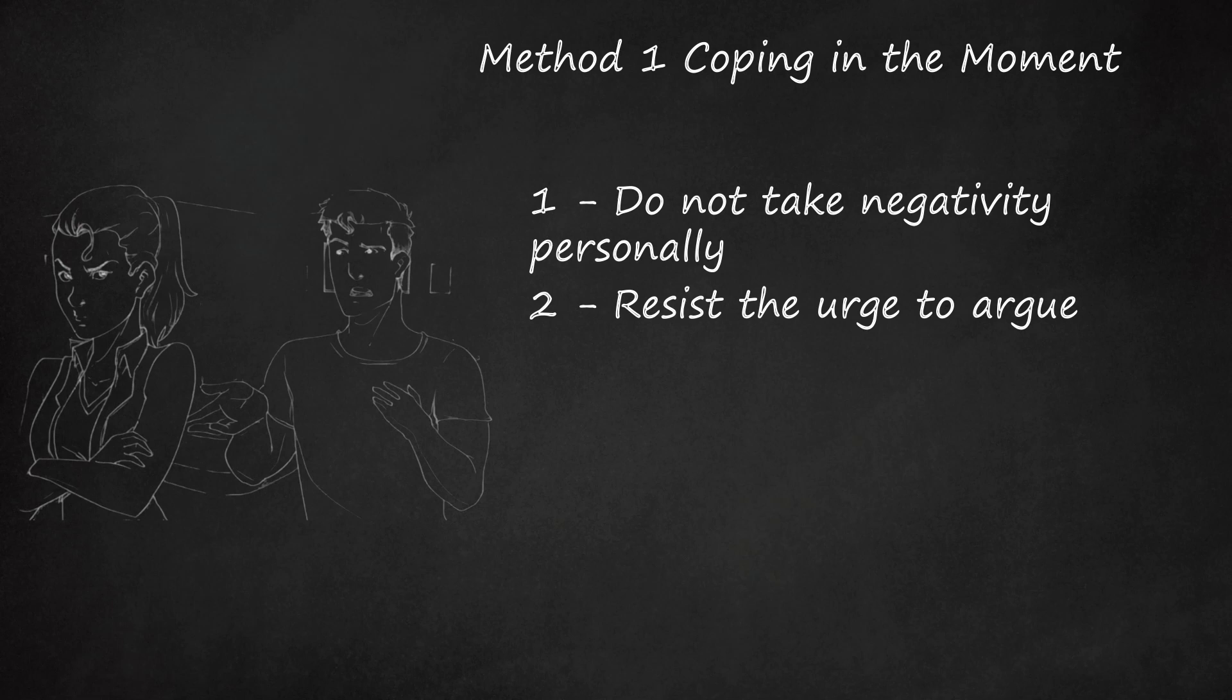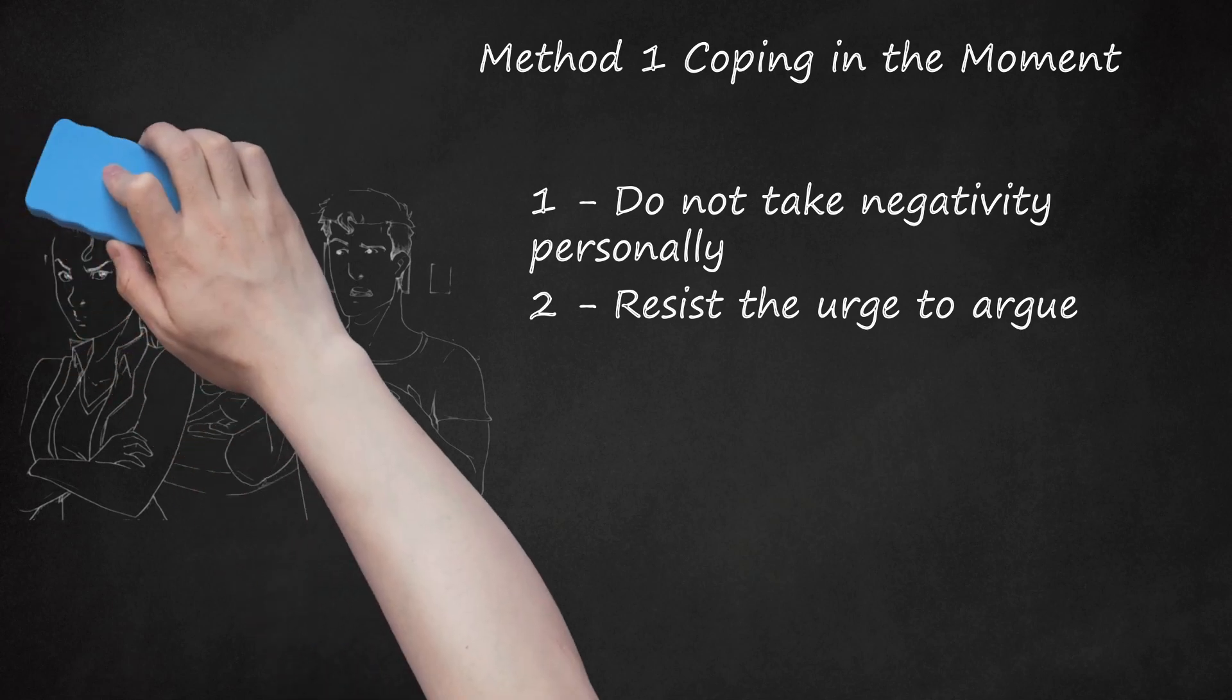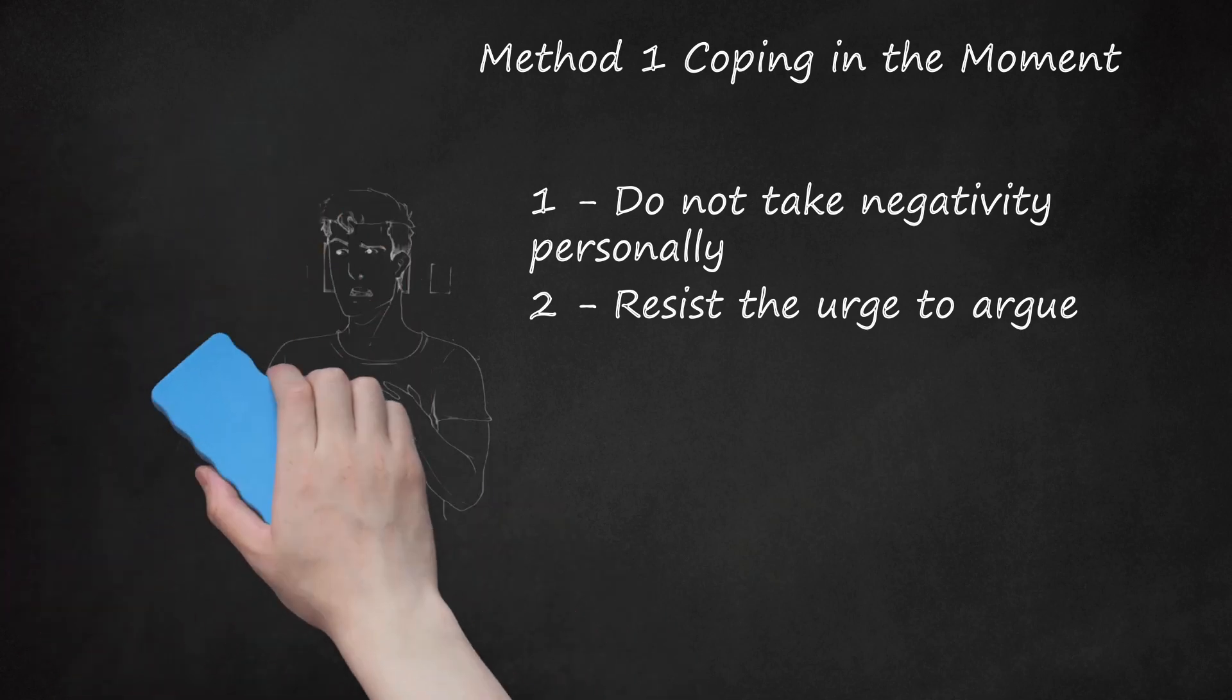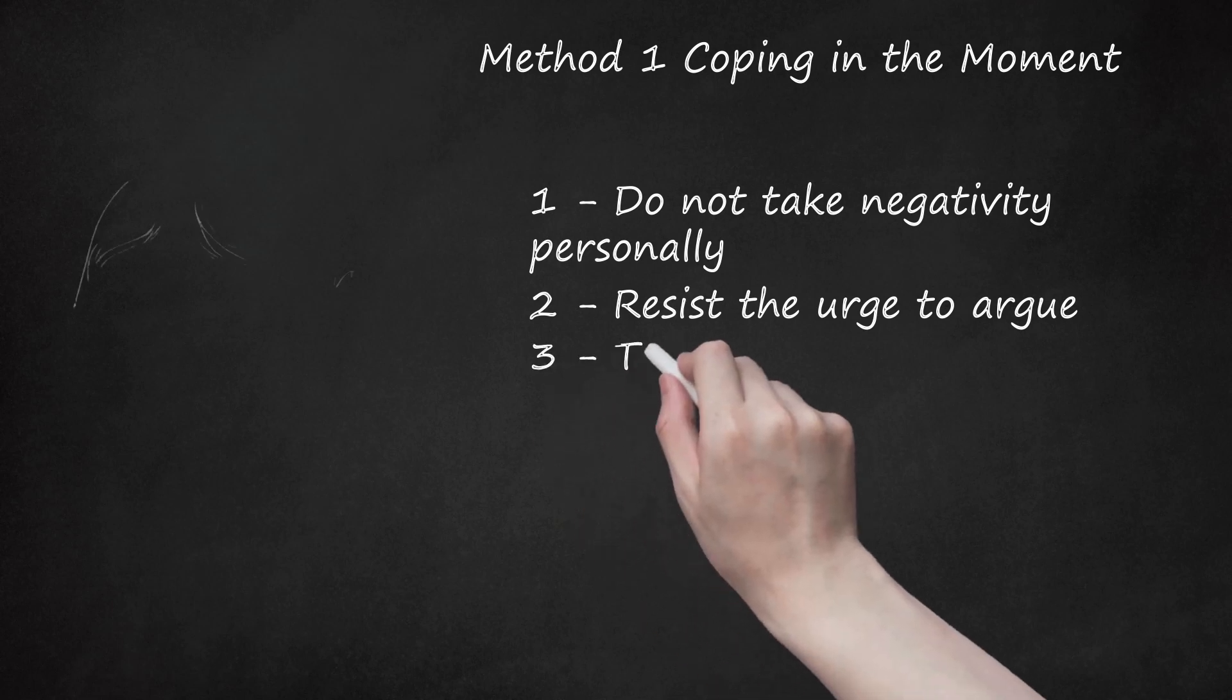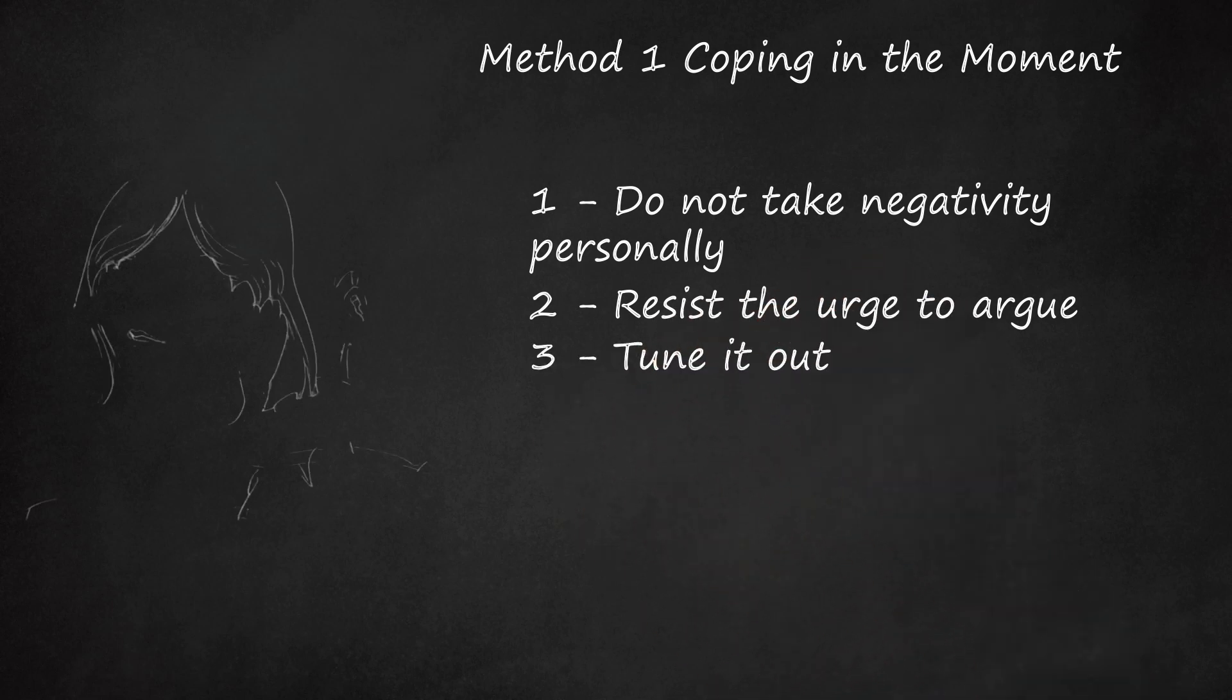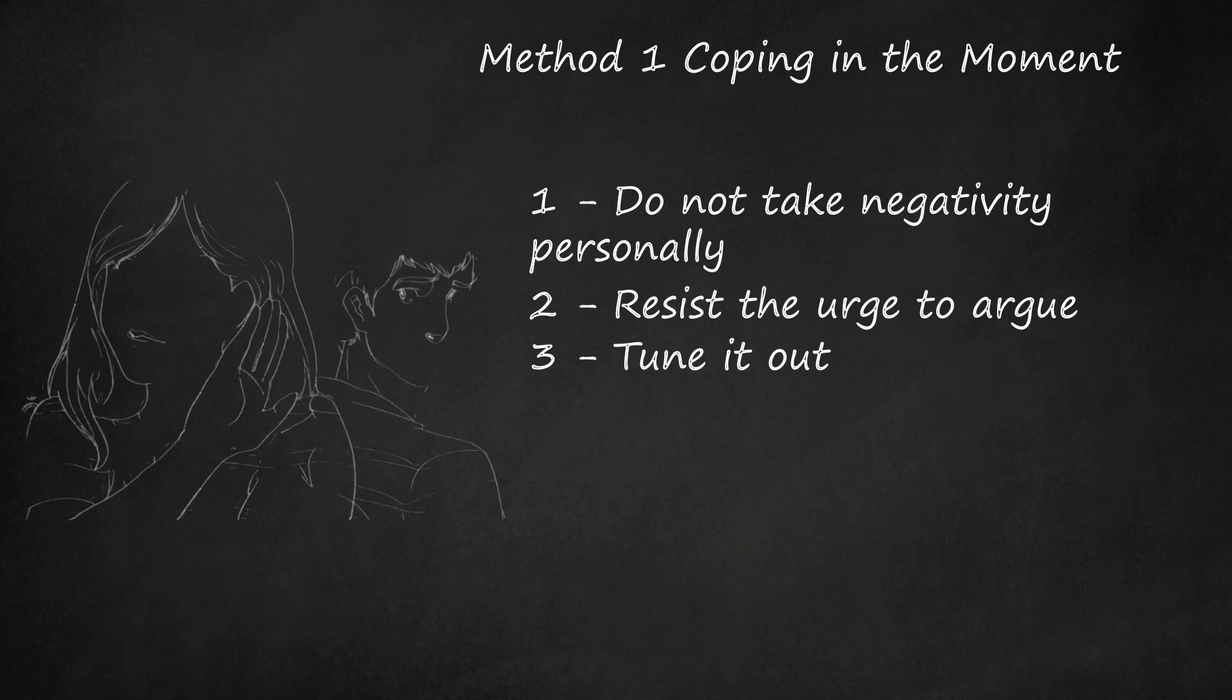If a person is very critical, they may continue to berate you past this point. Do not egg the person on. Simply continue to restate your opinion. Eventually, the other person will get bored and back off. Three, tune it out. Sometimes, the best means to deal with overly critical people is to learn to ignore them. For a critical person, complaining and nitpicking is simply a way of life. Learn to tune it out.